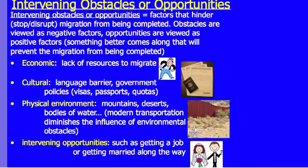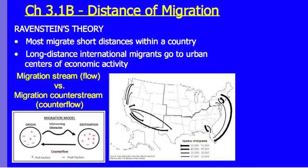According to Ravenstein, most migration covers short distances within a country — people move to a new community, state, or county. If long-distance international migration does occur, migrants usually go to large urban areas because of economic activity and job opportunities. Migration streams and counter-streams show people moving back and forth between the same places, such as between Texas and California, with arrow size representing the number of migrants.